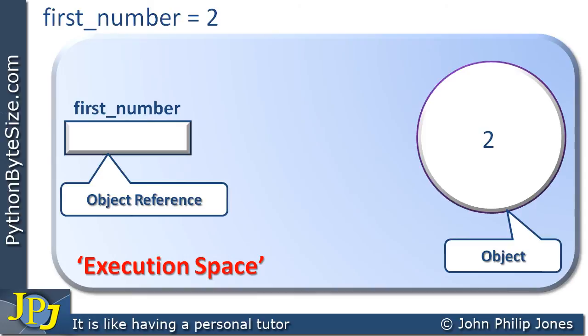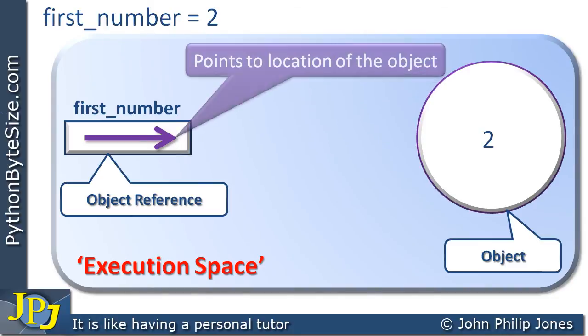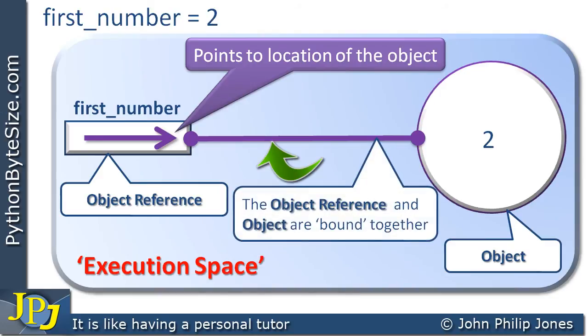But we need to know where it is, or should I say the object reference needs to know where it is. And I'm modelling this with an arrow, in the sense that the object reference points to where the object is in the execution space. And what will happen is this pointing to the location of the object results in this appearing here, and this is the object reference and object being bound together.